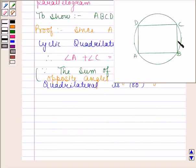Now, as ABCD is a parallelogram, angle A is equal to angle C, because in a parallelogram, opposite angles are equal.